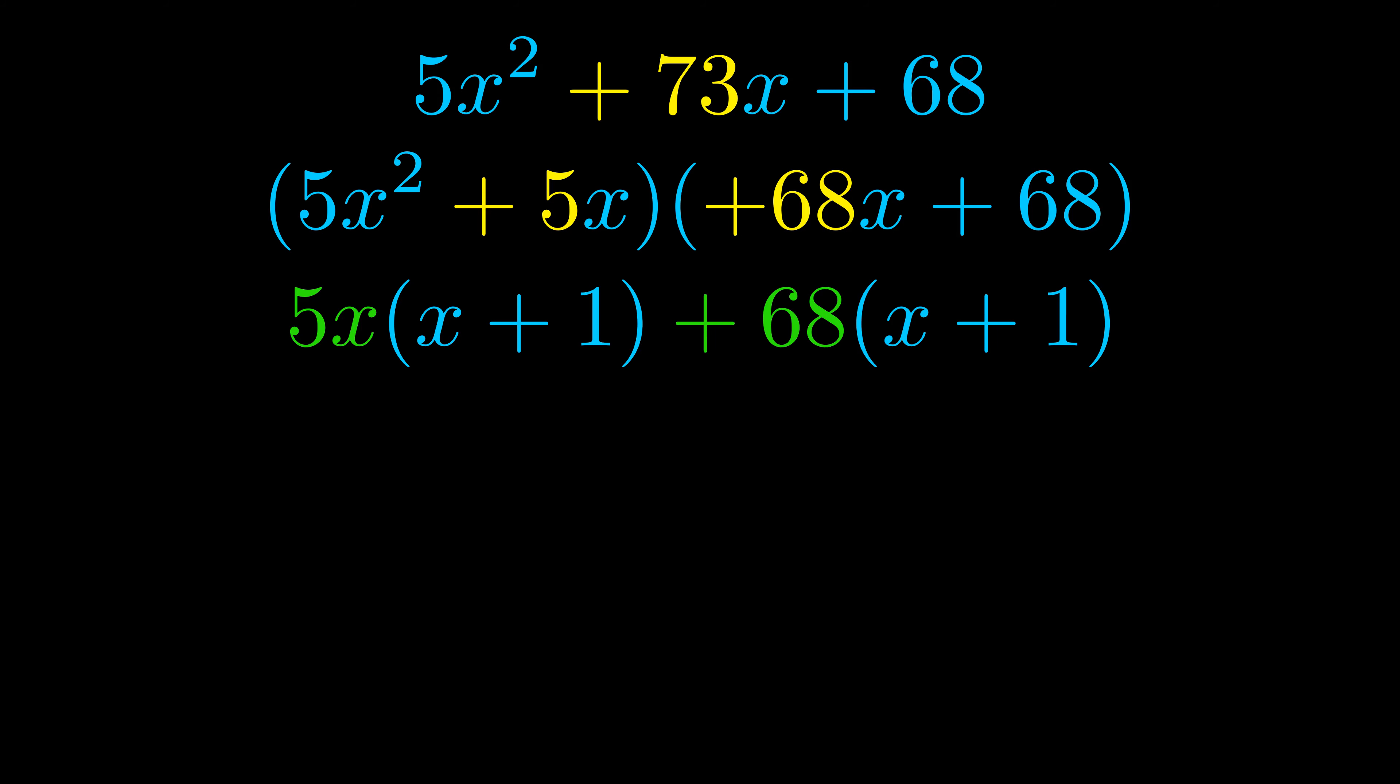Notice also how what remains inside of the parentheses is the same in both cases. The blue values are the same. Those blue values will become one of our factors, and we will combine the two green values, the GCFs that we pulled out, to get the other one. And that is our fully factored equation.